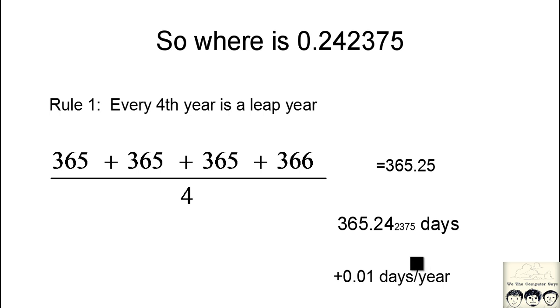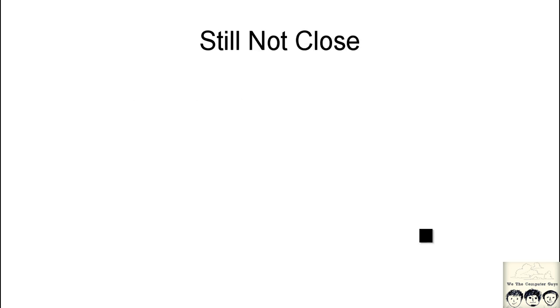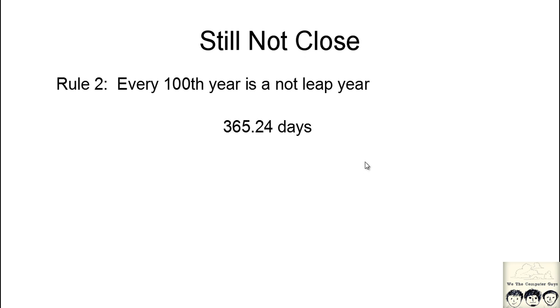So they introduced another rule saying that every 100th year is not a leap year. Now if we take the average, it comes out to be 365.24 days. Looking at the original figure with the accurate figure, we have 365.242375.